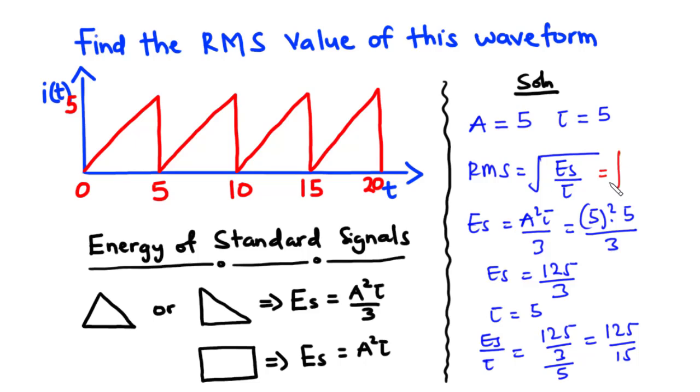So the RMS value is equal to the square root of 125 divided by 15, which is equal to 2.887 amperes.